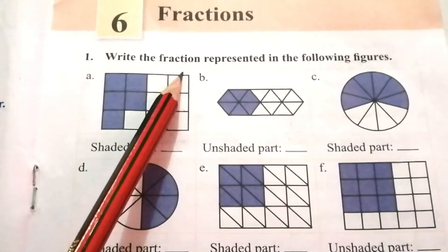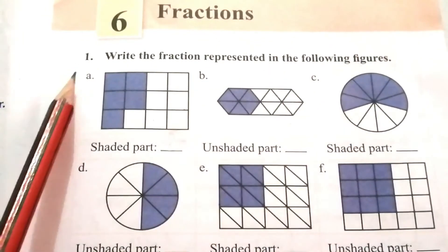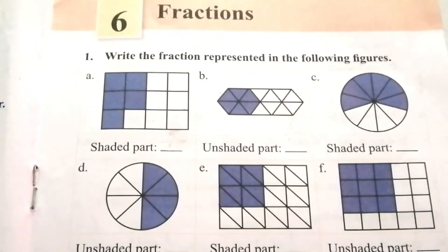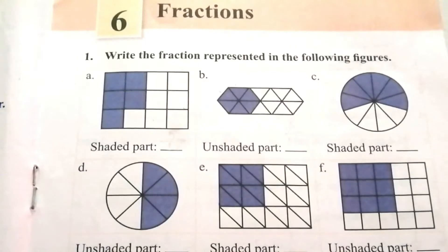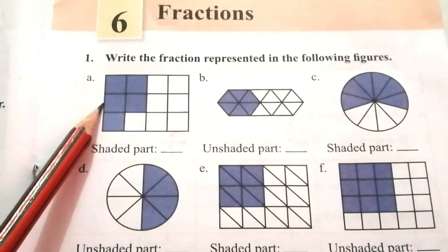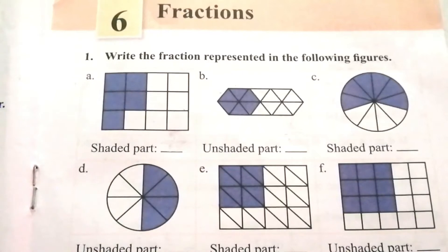Question 1: Write the fraction represented in the following figures. Part A: shaded part. We have to find the fraction for the shaded part. In a fraction, we have to find out the numerator and denominator. Here, numerator is equal to shaded parts and denominator is equal to total number of parts.